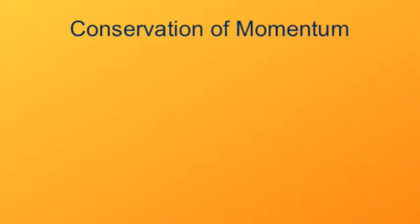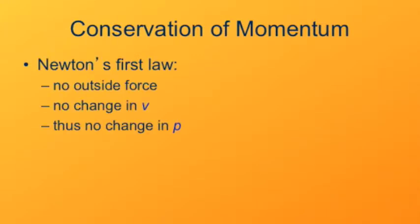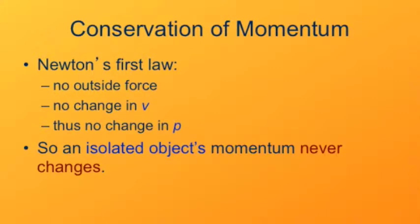Here's the basic idea behind conservation of momentum. We already know some of the consequences of conservation of momentum, so it'll be easy to see how it shows up. Consider an isolated particle. If it receives no force from the outside, its velocity won't change. If its velocity doesn't change, then of course its momentum won't change. So from what we already know with Newton's first law, an isolated object's momentum never changes. Newton's first law is a consequence of the conservation of momentum.